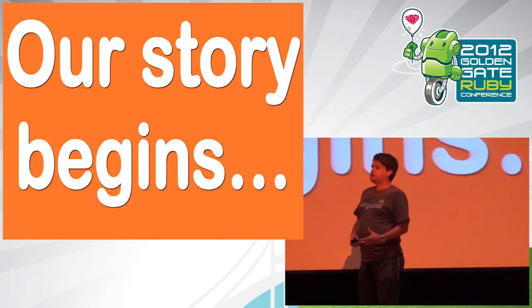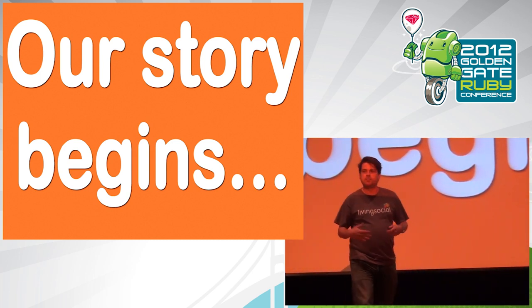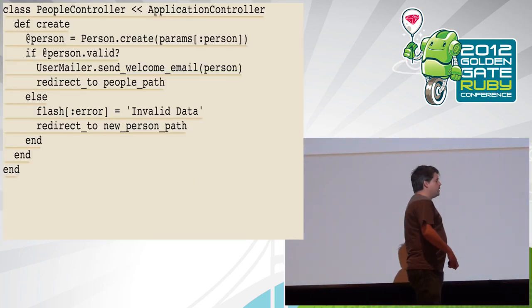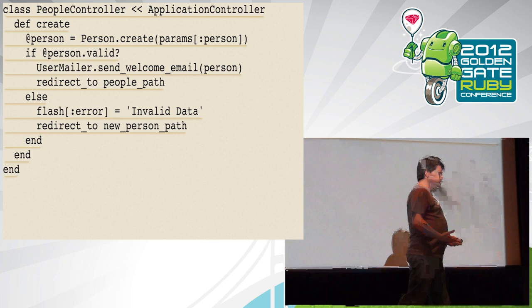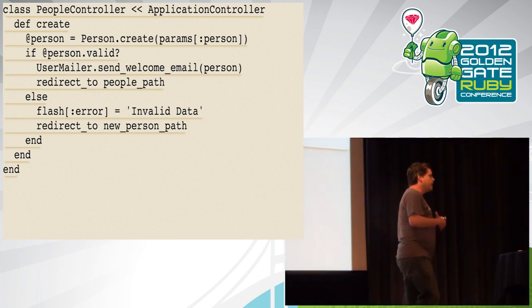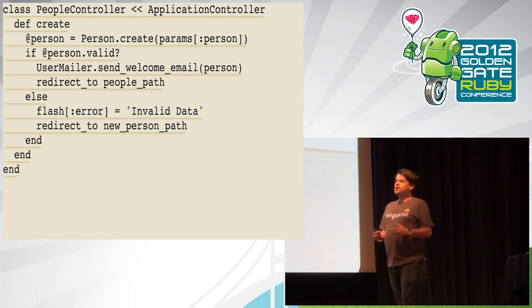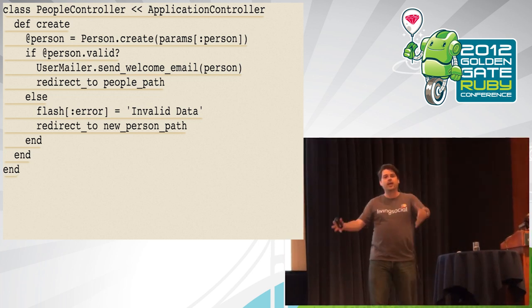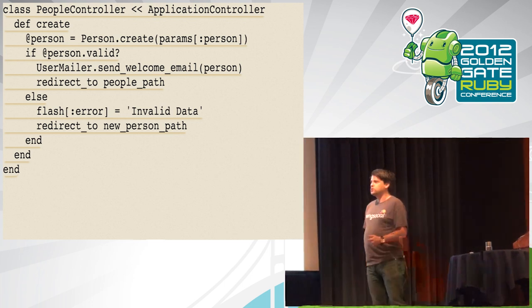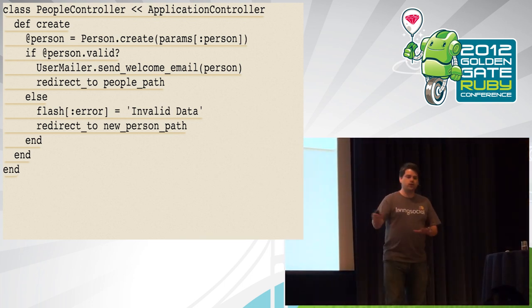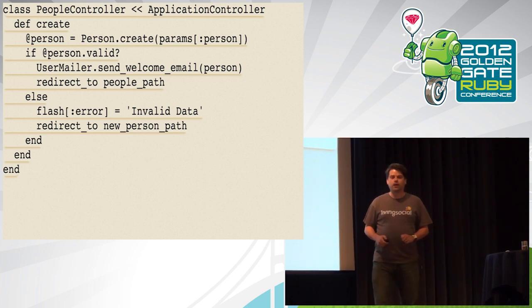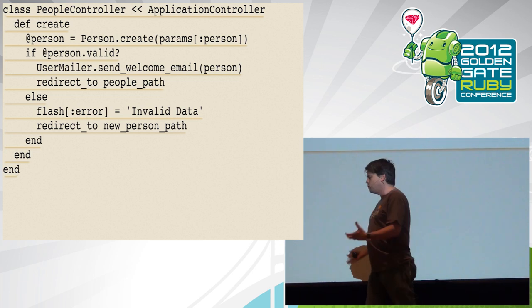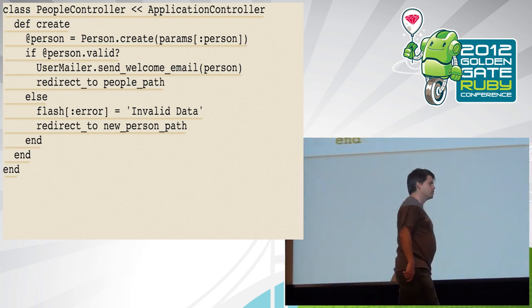Our hypothetical business wants users to sign up and buy stuff. The first thing we need is a controller that lets people sign up. We don't want people to just sign up and use the site — we want to send them an email, and they need to click a link to validate their email address, then their account is activated. We have a pretty vanilla Rails controller with just a little UserMailer thing in there. It was easy to write, easy to test, we got it deployed, people started signing up. This is why we use Rails — it's great.